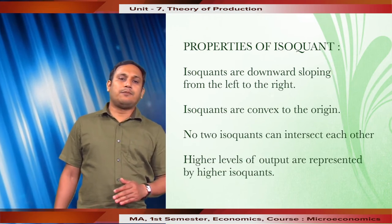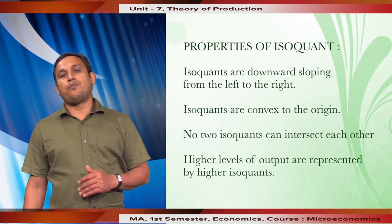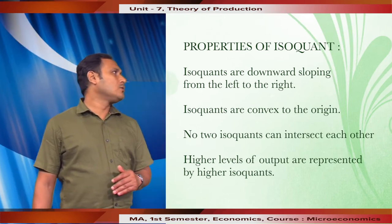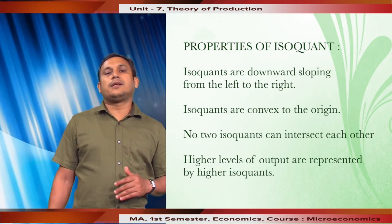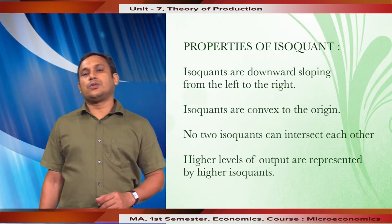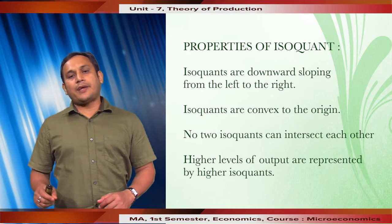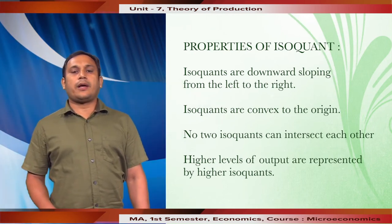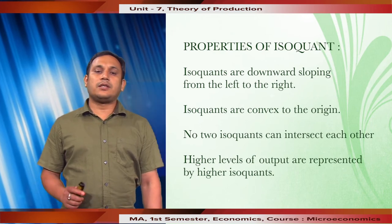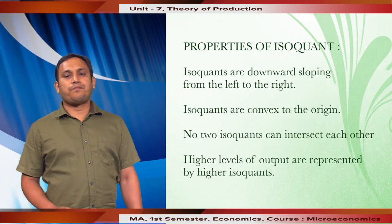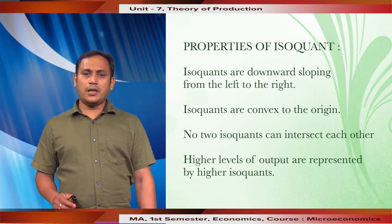Now we will discuss the basic properties of isoquants. The first property is that isoquants are downward sloping from left to right, because as one input increases the other must be reduced so as to maintain the same level of output. The second important property is that isoquants are convex to the origin. The convexity of the isoquant arises on account of diminishing marginal rate of technical substitution. The marginal rate of technical substitution is the rate at which one input is substituted for the other keeping the output the same.